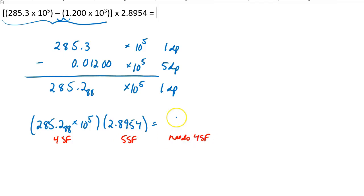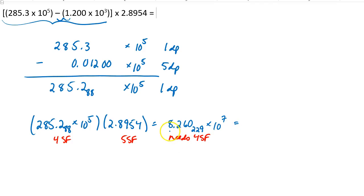Let's see what we get. I got quite a large number: 8.260 with an insignificant 29, times 10 to the 7th. So I've written a number with 4 sig figs. Let me round it: 8.260 times 10 to the 7th.